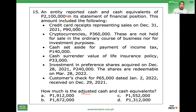First: credit card receipts representing sales on December 31 — 90,000. That credit card sales amount is still a receivable, so it was erroneously included. Minus. Second: cryptocurrencies, 360,000 — we'll discuss this further.